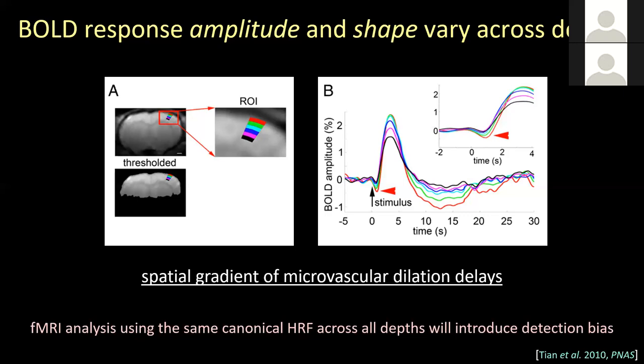It's been posited that this is due to not only different vascular contributions across cortical depths, but also due to the spatial gradient of microvascular dilation delays as a function of cortical depth — or more to the point, as a function of branching order of the vasculature. What this means is that in an fMRI analysis, especially a test-based analysis, if you use a single canonical HRF across all cortical depths, there's likely to be a detection bias. You're more likely to see activation at the depth where the hemodynamic response matches your model. This is more relevant for short event-related paradigms where timing is really important, whereas for long prolonged block design experiments, this is less of an issue.